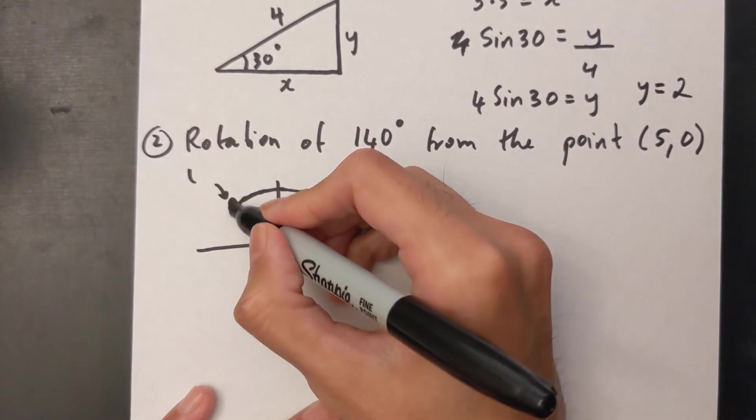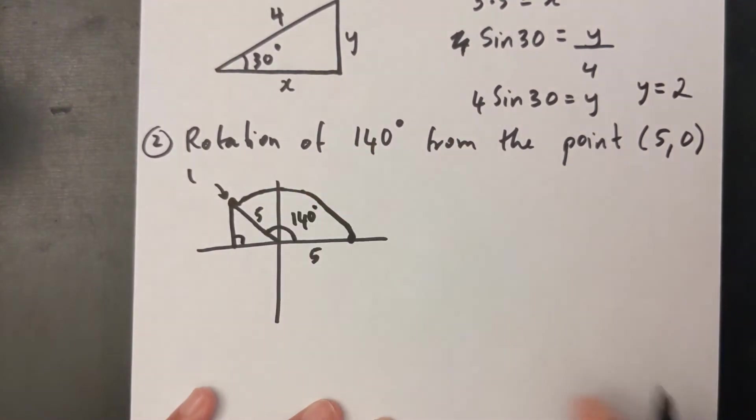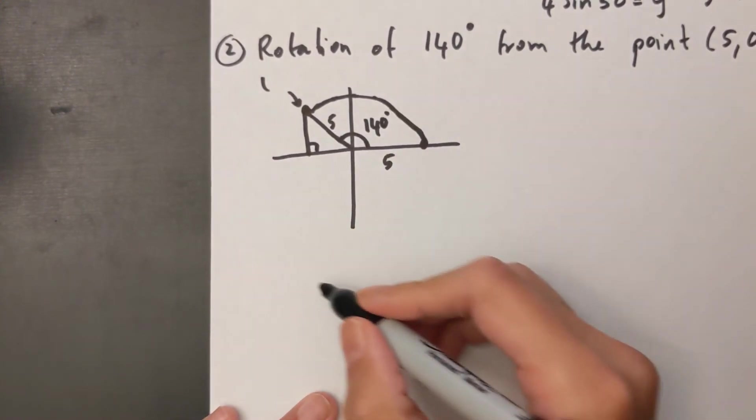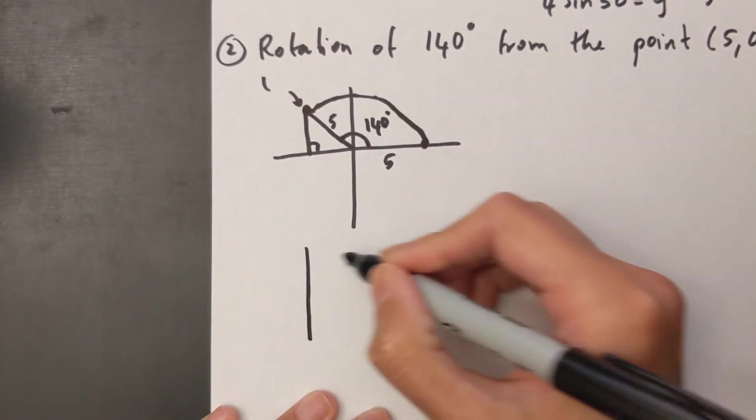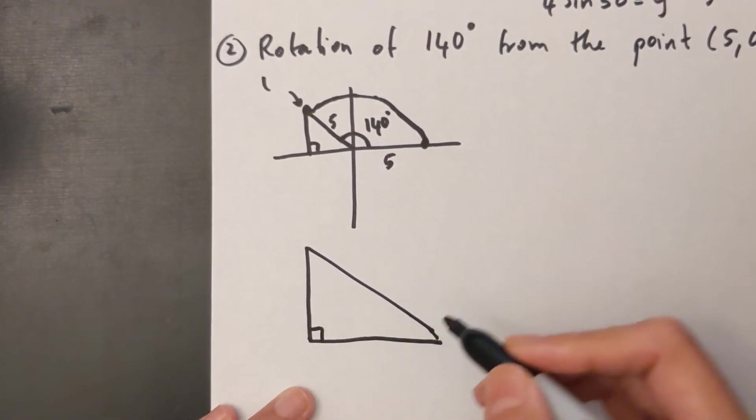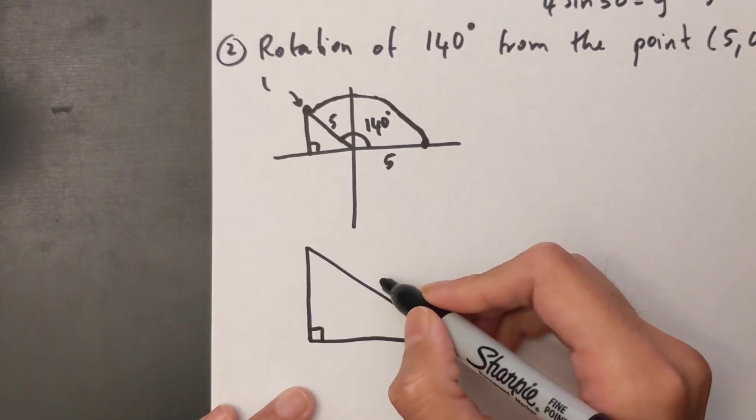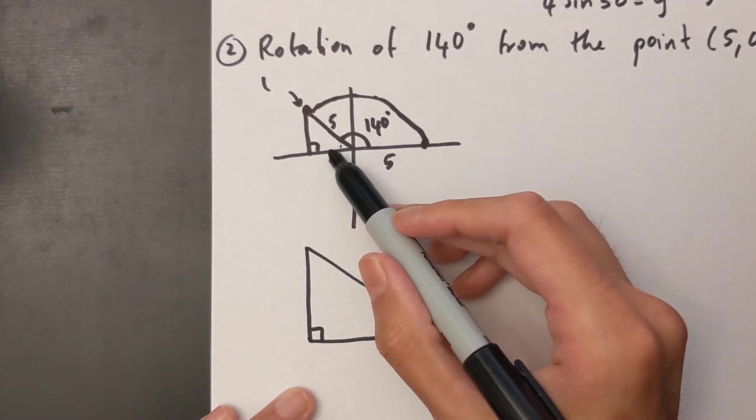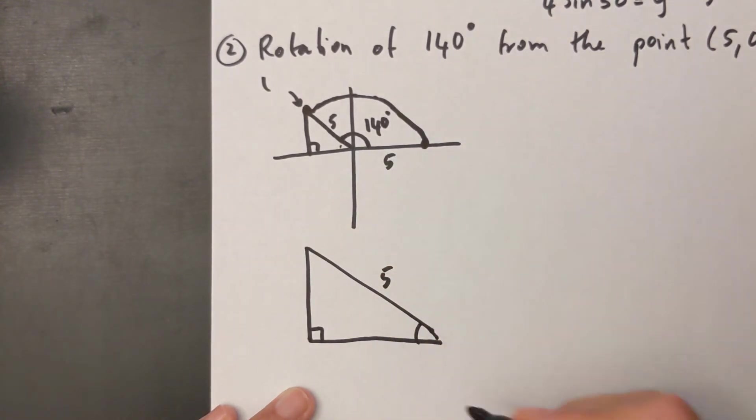So same idea: I'm going to make a right triangle over here and solve for that right triangle. I'll draw it a bit bigger over here as well. So I know that the hypotenuse is 5. Now I need to find this tiny angle here. In order to find this tiny angle, I can do 180 minus 140, which is 40 degrees.